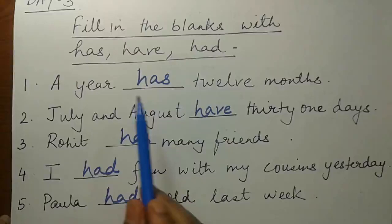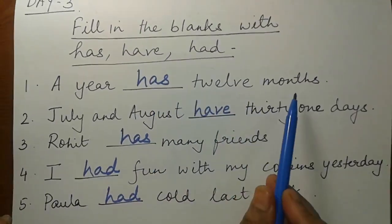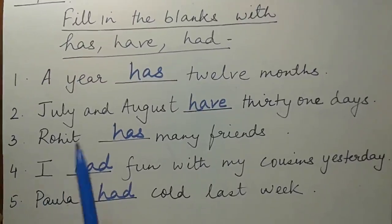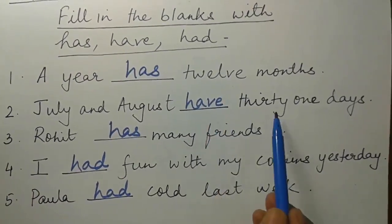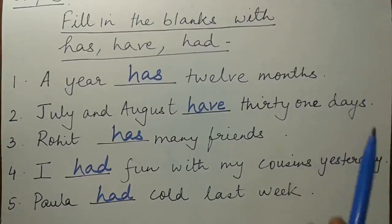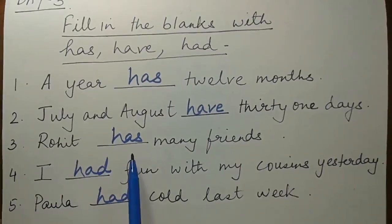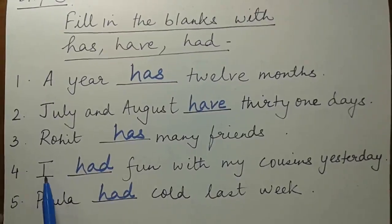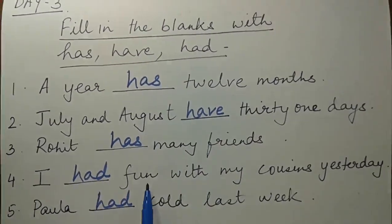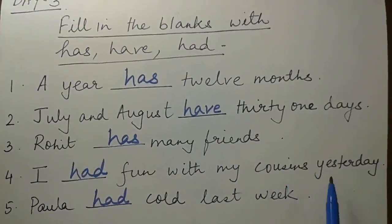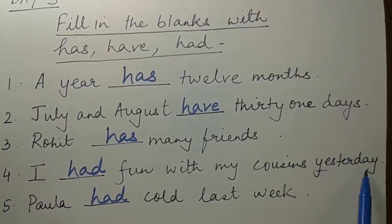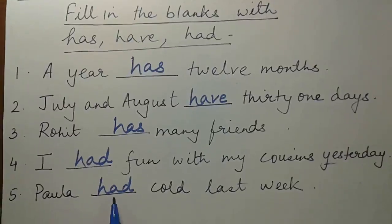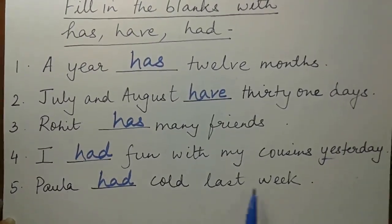Let's review the answers. A year has 12 months. July and August — two months, more than one — have 31 days. Rohit has many friends. I had fun with my cousins yesterday — yesterday is there, so it is had. Paula had called last week.